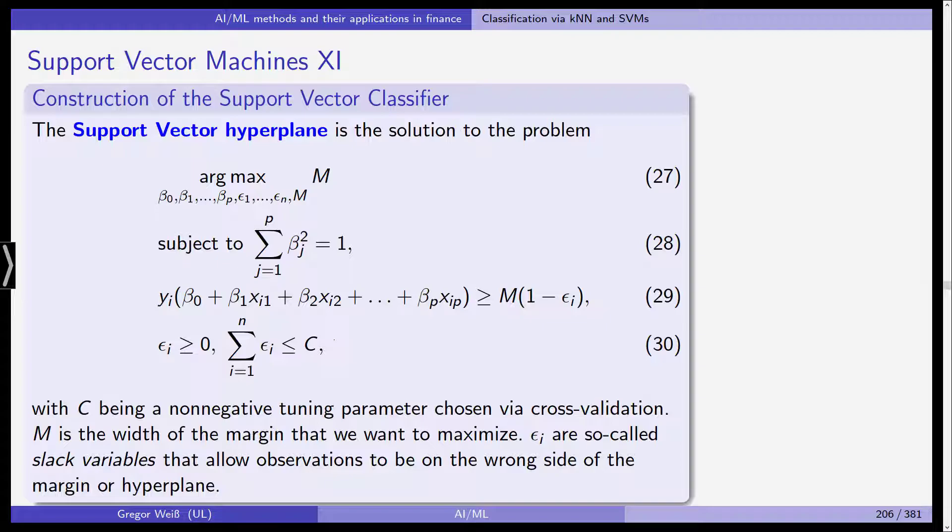So the difference to the maximum margin classifier can be seen here in the optimization that leads to the support vector classifier or the support vector hyperplane that we used to classify. We again use our constant M. We have our parameters beta 0, beta 1, etc. for the hyperplane. And now we have additional variables, epsilon 1 through epsilon n, and we maximize M with respect to these parameters. We have the same constraint in line 28,